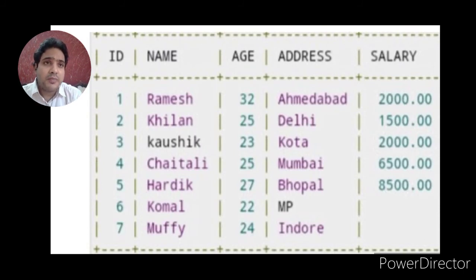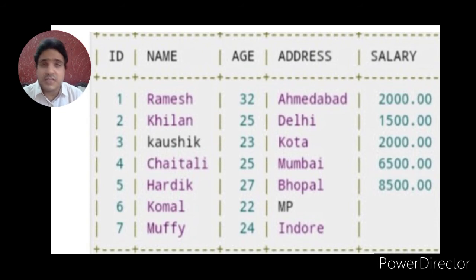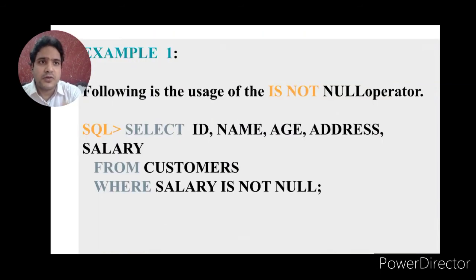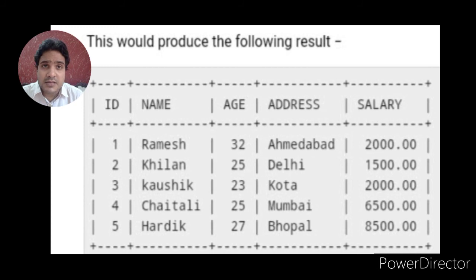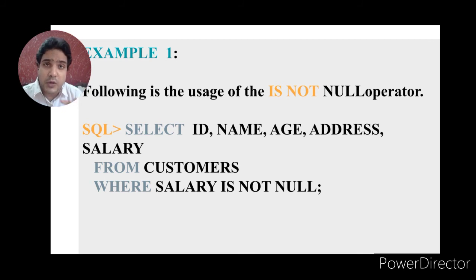Looking back at the table, there are five tuples from ID 1 to 5 whose salary is not null — they contain explicit values. So the output will show those five records. The tuples where salary is null will be invisible, and the others will be visible because we wrote WHERE salary IS NOT NULL. Note: we cannot write the equals symbol or not-equals symbol to compare null values — we must use IS and IS NOT.